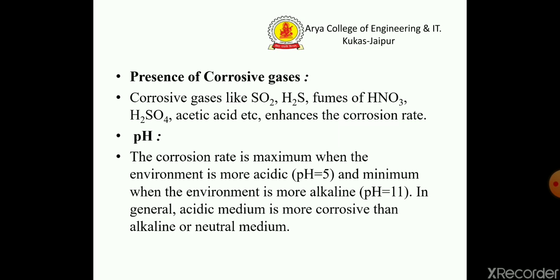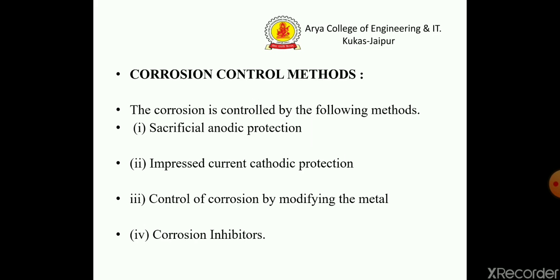Next, corrosive gases such as SO₂, fumes of HNO₃, H₂SO₄, and acetic acid increase the corrosion rate. The next factor is pH — the corrosion rate is maximum when the environment is more acidic and minimum when the environment is more alkaline. In general, acidic medium is more corrosive than alkaline or neutral medium.